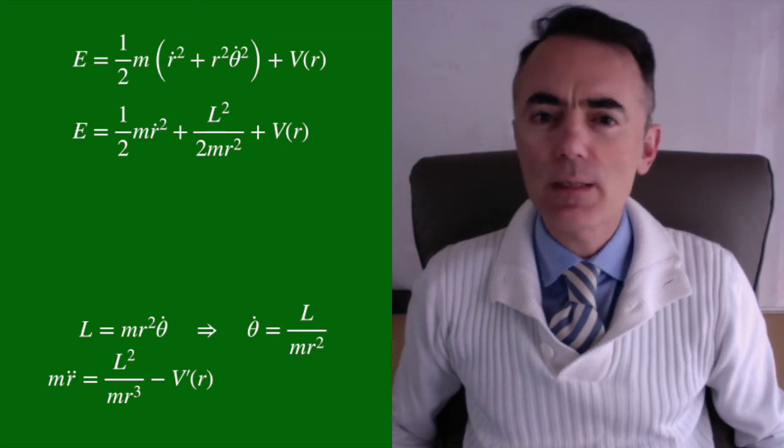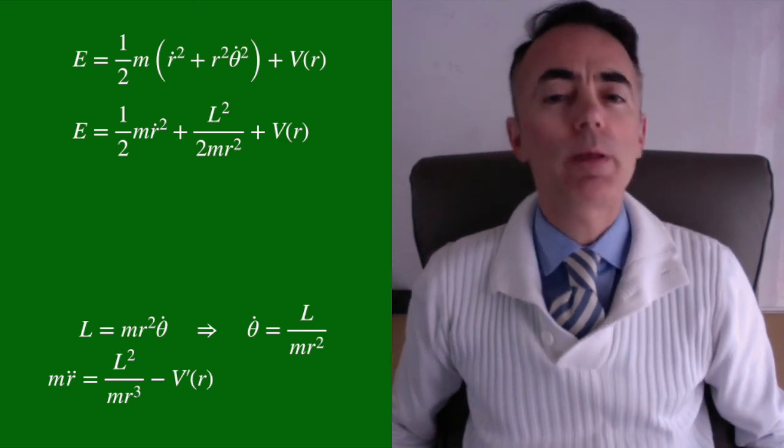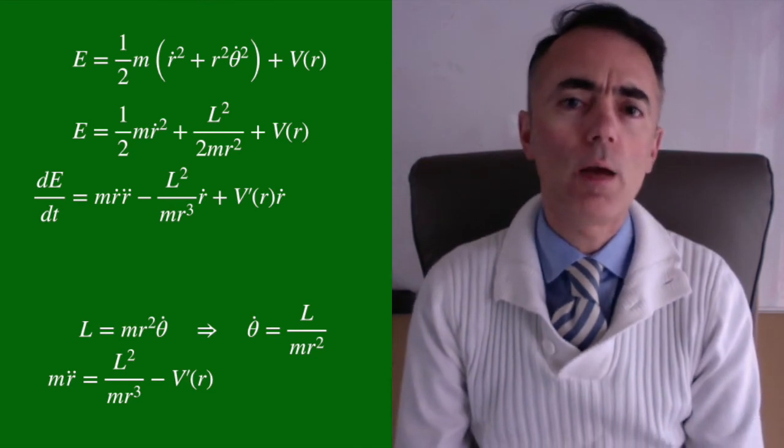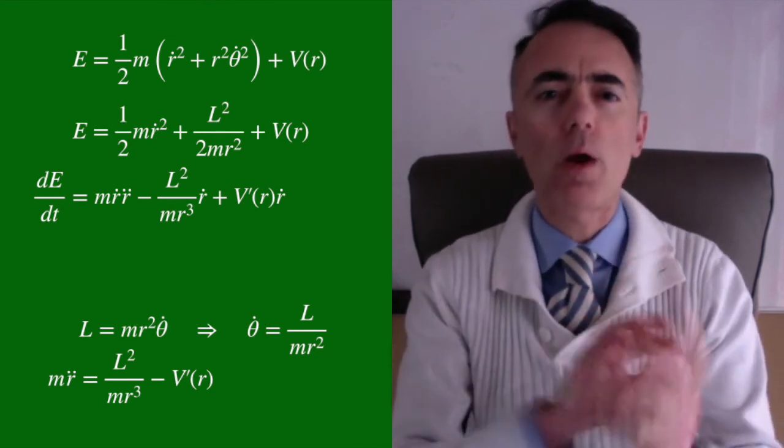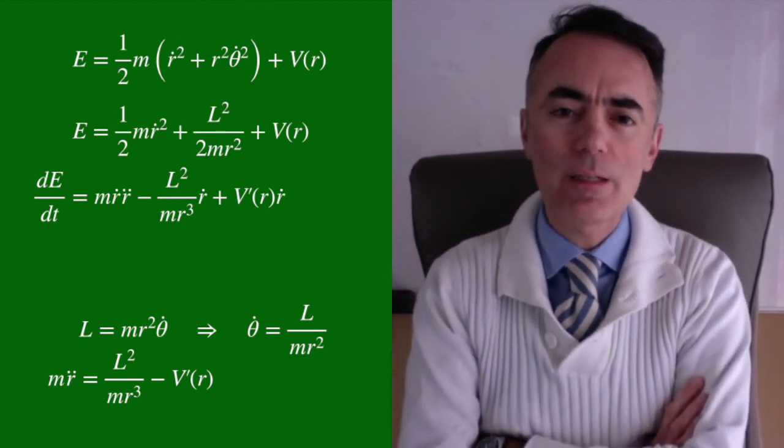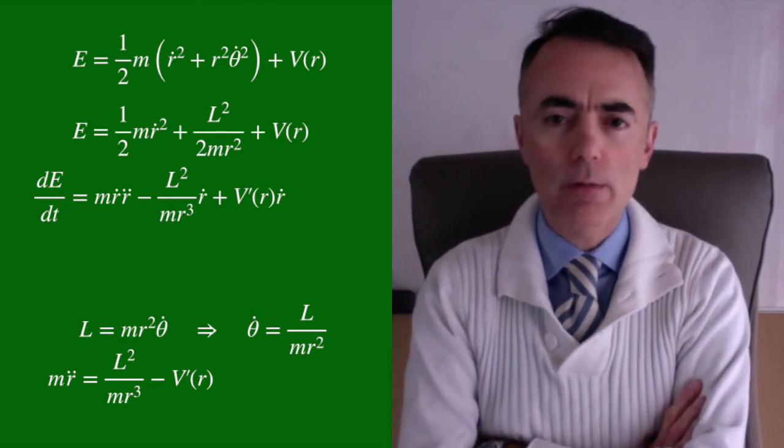And please, let me now derive it respect to time. mr dot r double dot minus L squared r dot over mr cubed minus V prime times r dot. Remember that the potential depends explicitly on r, and r depends on time.